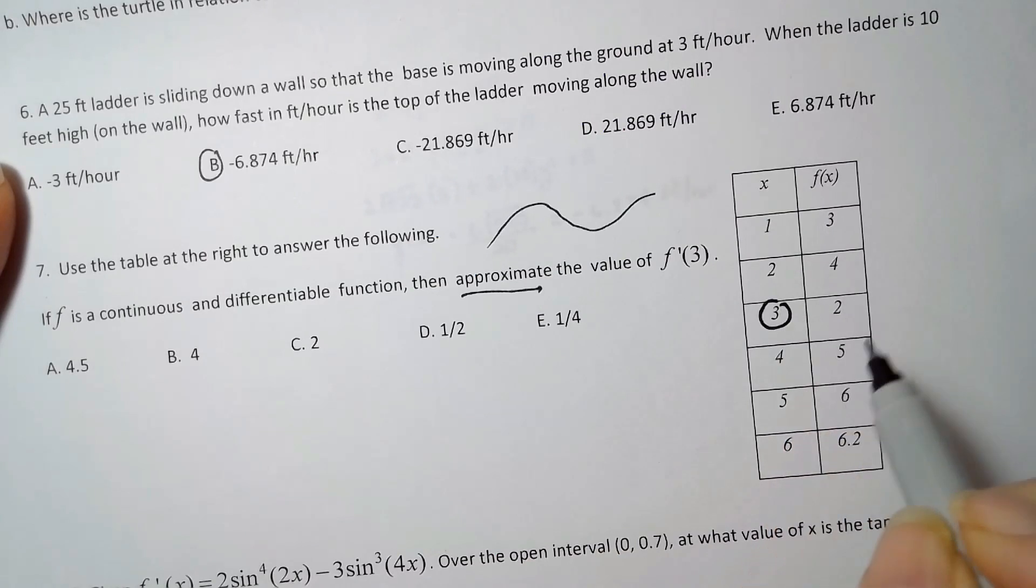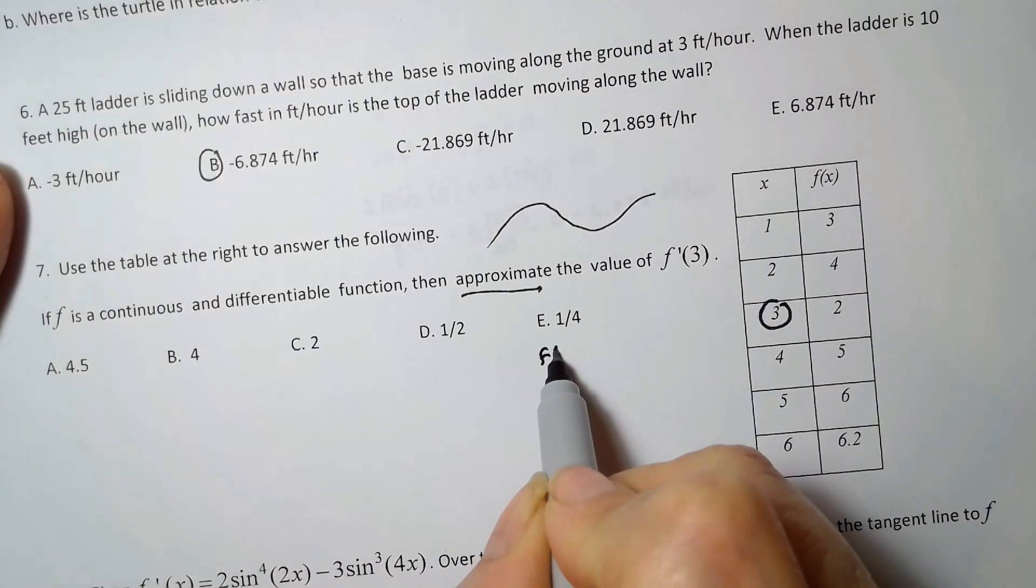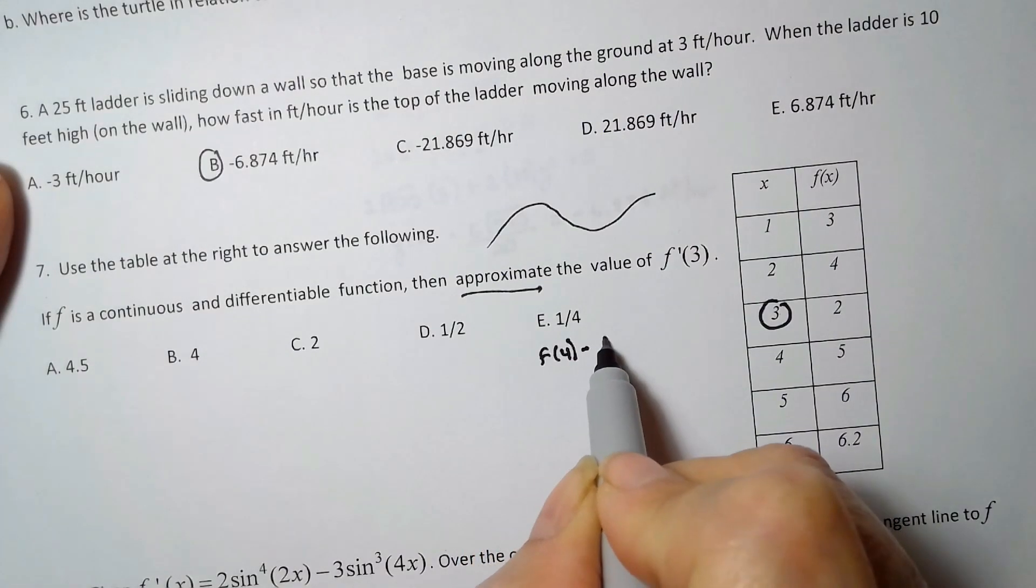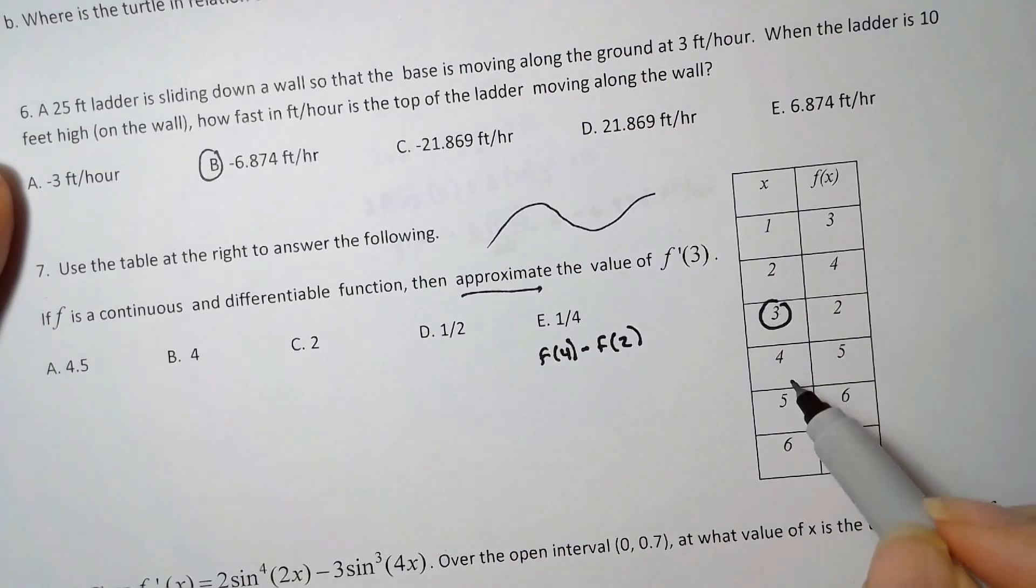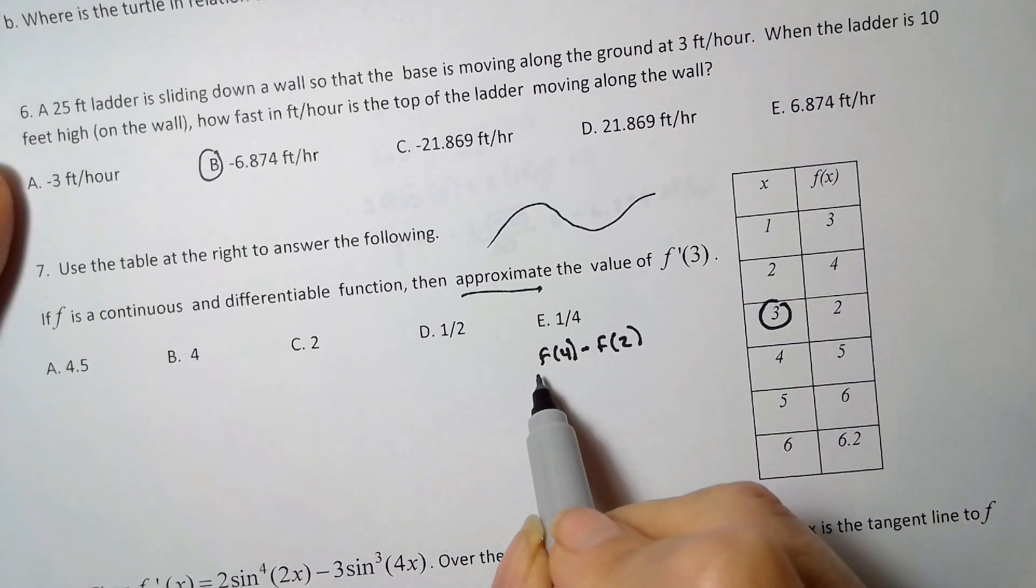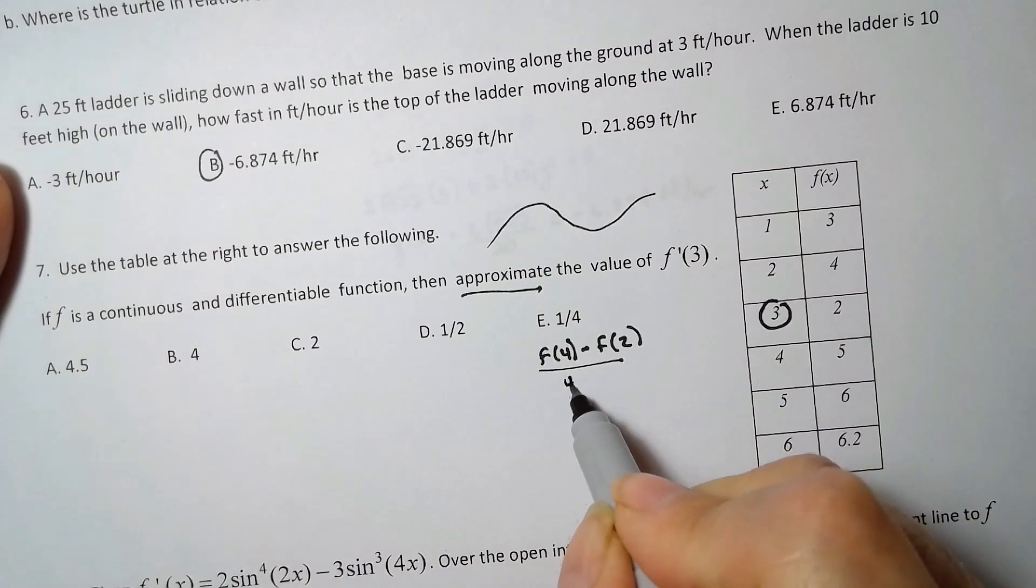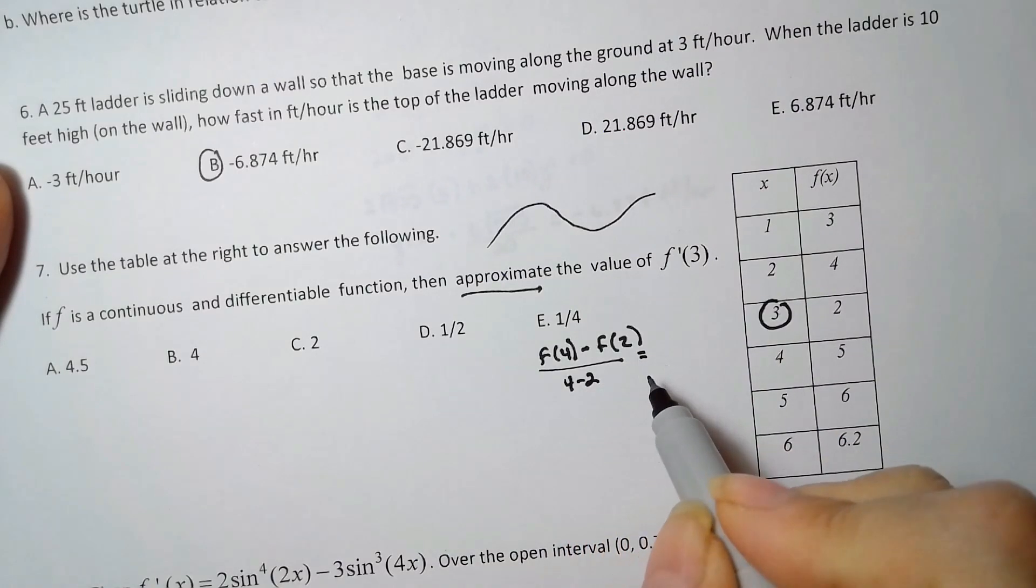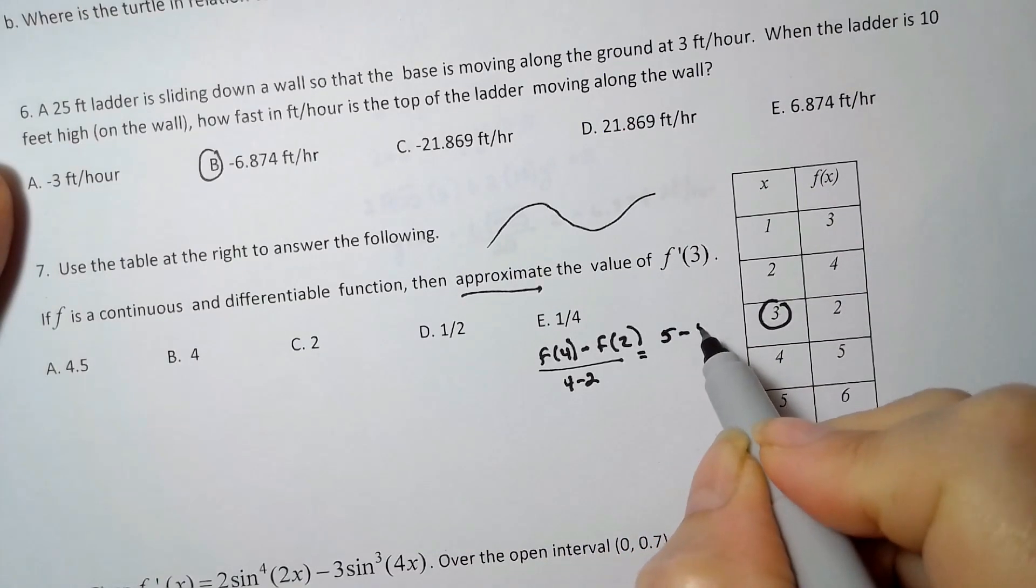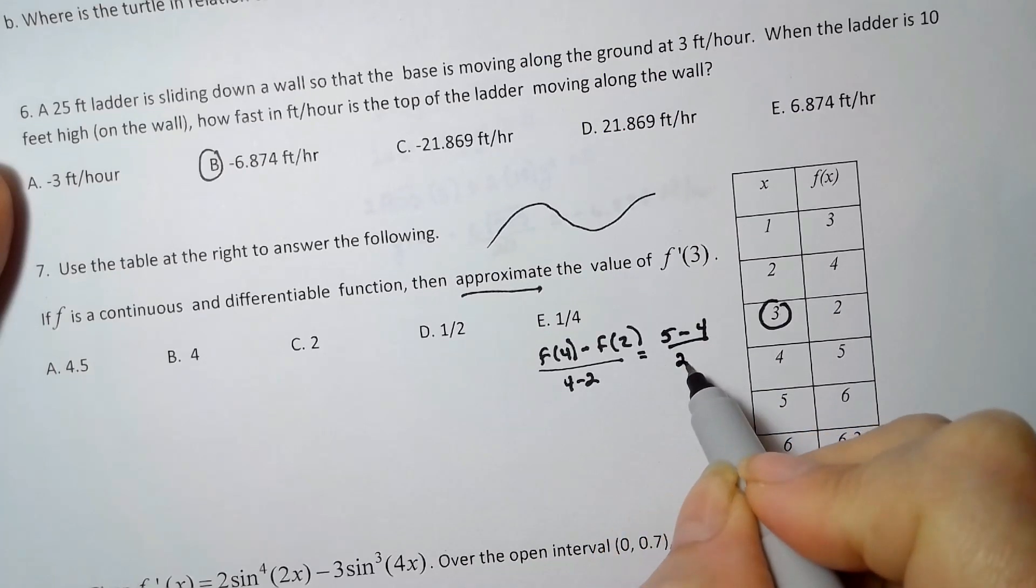So I want the derivative of this function right at this point when x is equal to 3. So that's f(4) minus f(2). Remember this is in the middle, so you just go a little bit to the left, a little bit to the right. f(4) minus f(2) over 4 minus 2. Well, f(4) is 5, f(2) is 4, 4 minus 2 is 2.